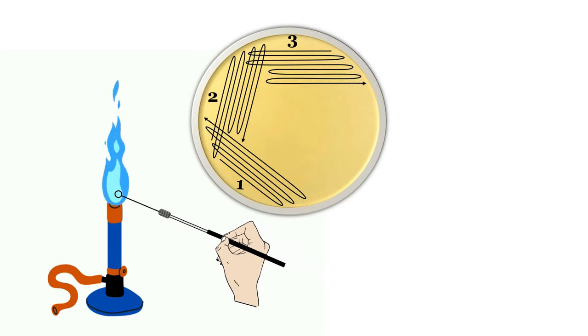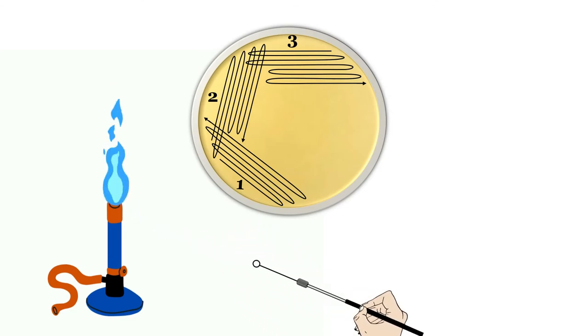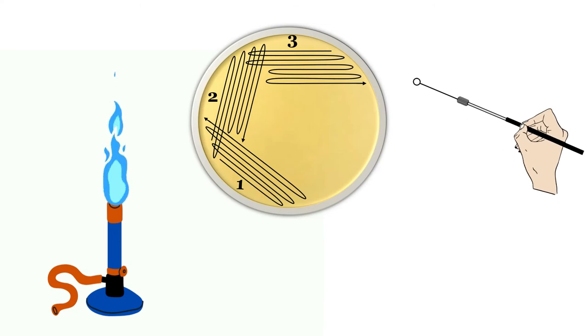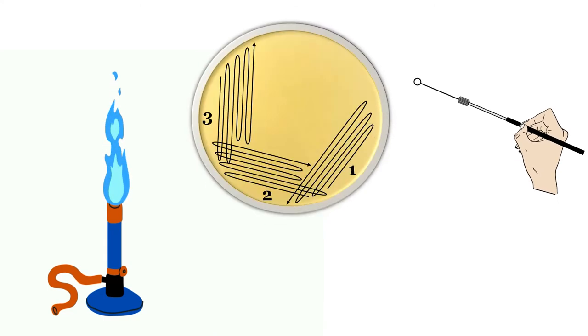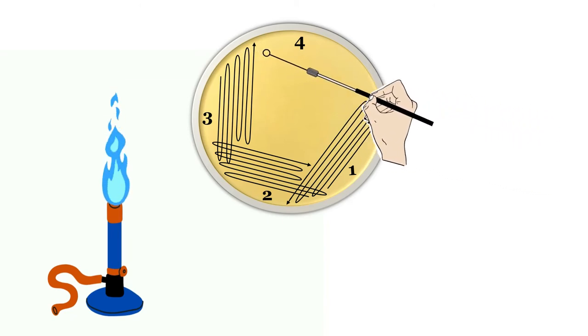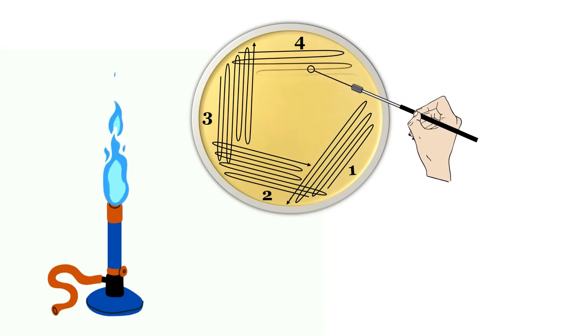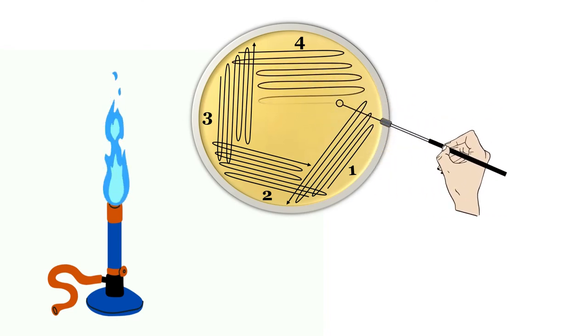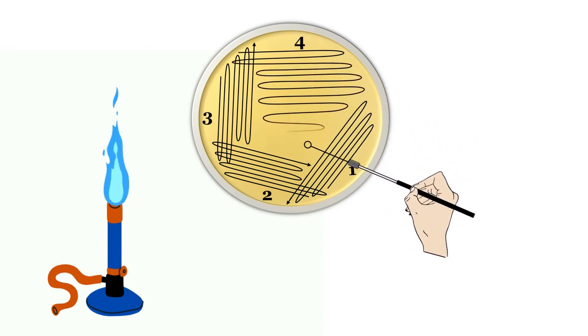Now flame the wire loop again and allow it to cool. Rotate the petri plate less than 90 degrees. In the same way using a sterile loop, the culture from corner of sector 3 is streaked into the sector 4. The streak should extend into the middle of the plate.